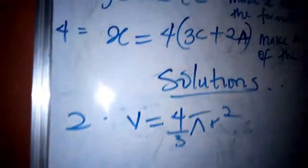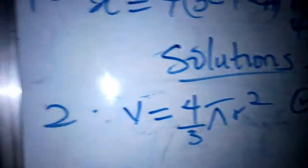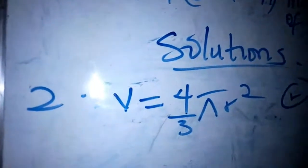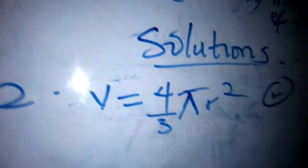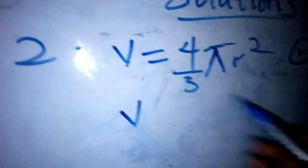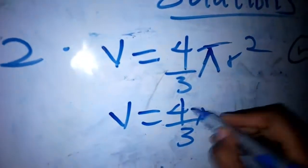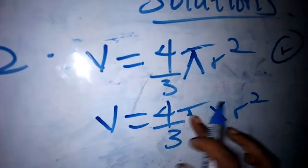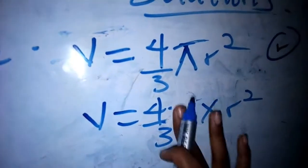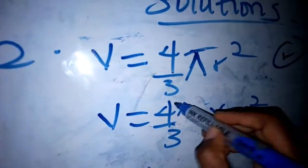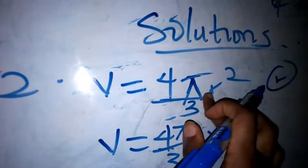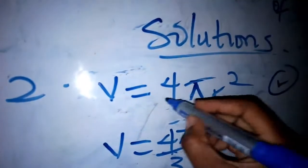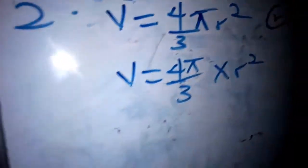Question two says make r the subject of the formula for V equals 4 over 3 pi r squared. Don't be scared — it's actually very simple. The 4 over 3 is only for pi, so this can be written as 4 over 3 pi times r squared. The 4 over 3 applies to pi only, not to everything.